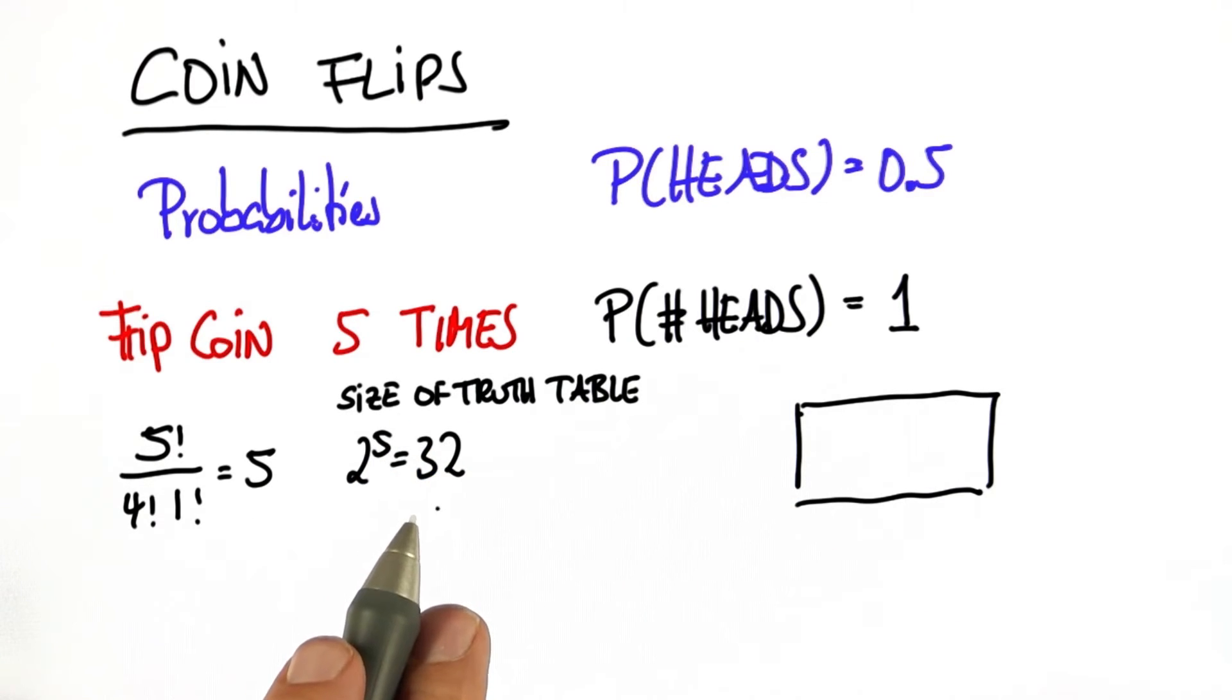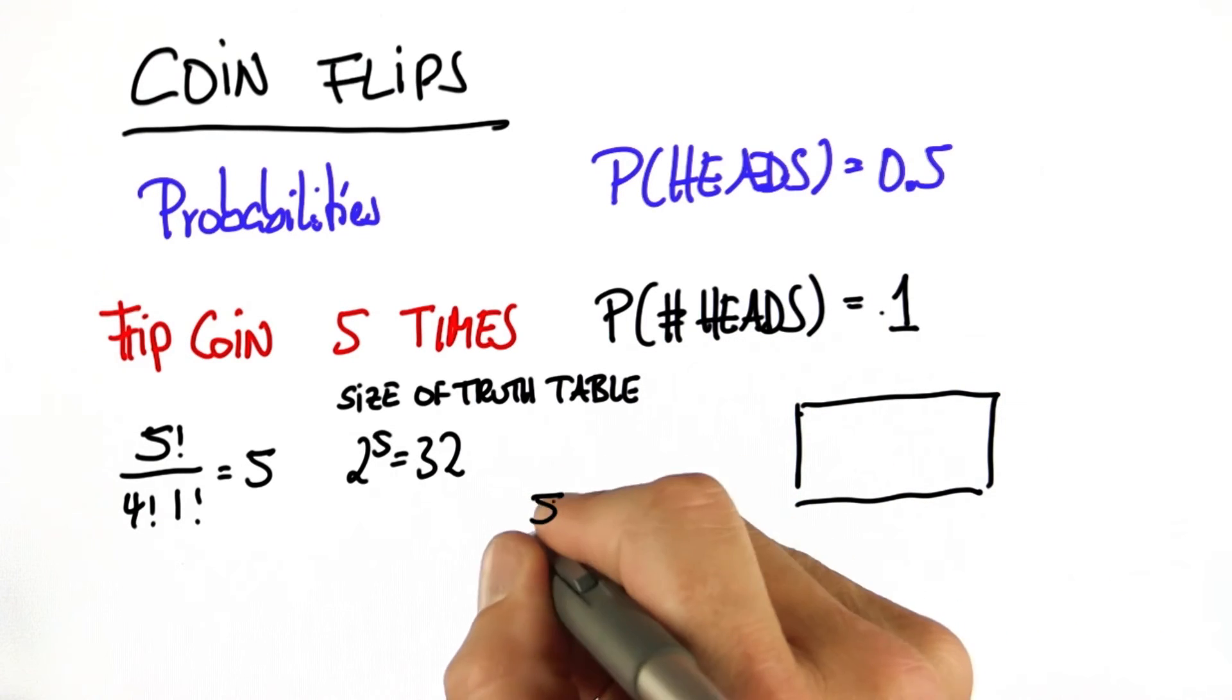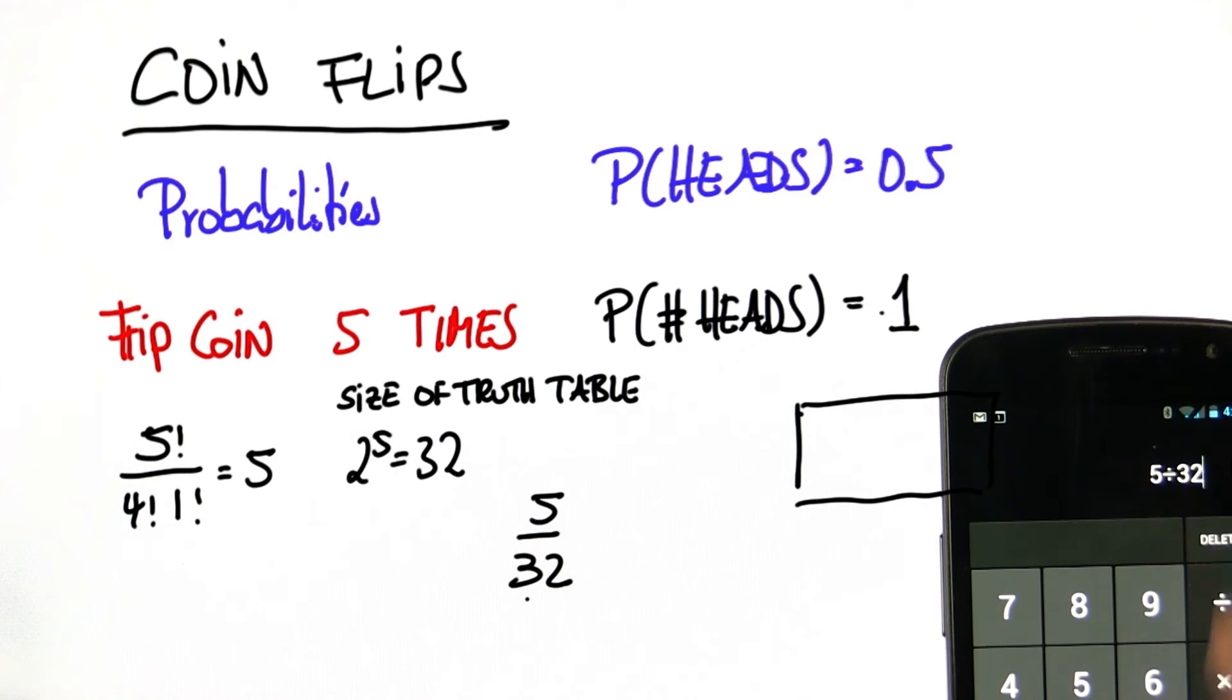So 5 out of 32 outcomes have exactly 1 heads. So that would suggest that the answer is 5 over 32. And my calculator tells me this is 0.15625.